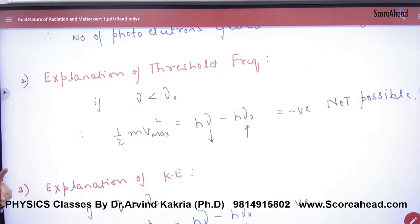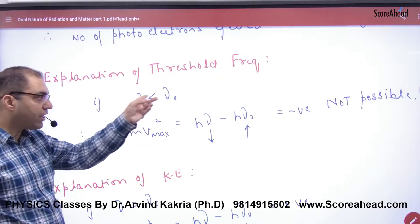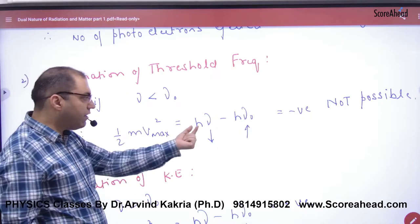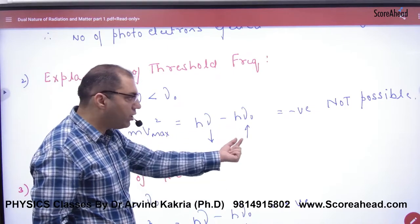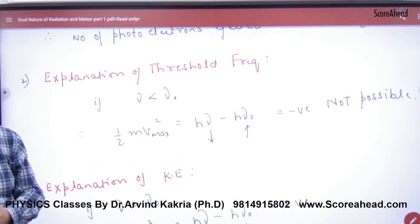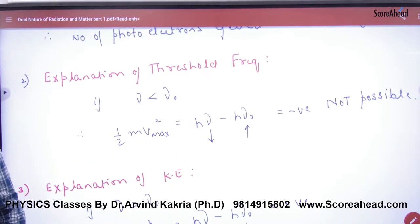The second law states that if the frequency is less than the threshold frequency, the kinetic energy of the electron would be negative, which is not possible. This means photoelectric emission is only possible if the frequency is greater than or equal to the threshold frequency.